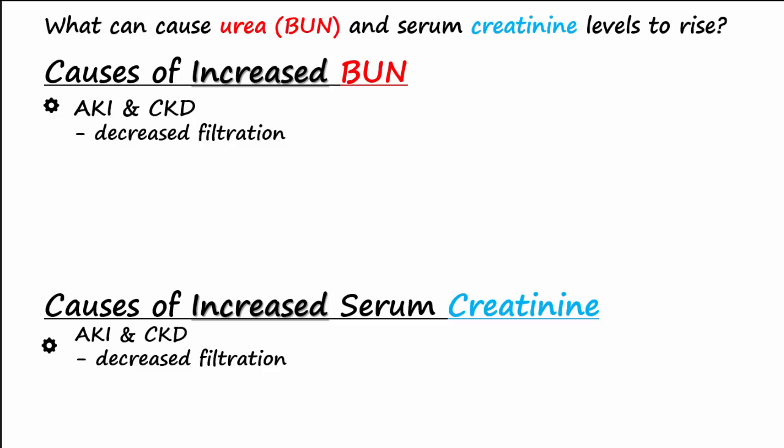With CKD, there are fewer nephrons to filter the urea and creatinine out of the blood. Because of this, both urea and creatinine levels will go up in the blood.